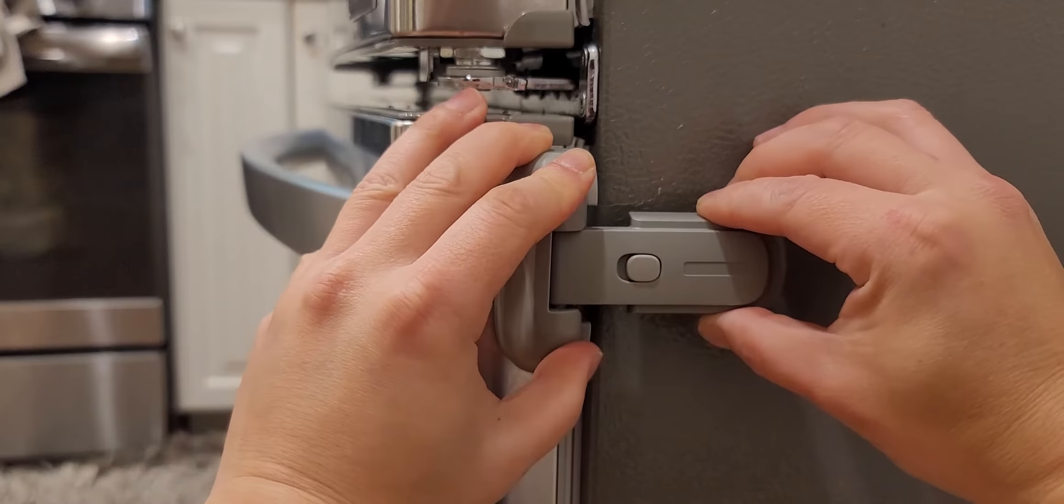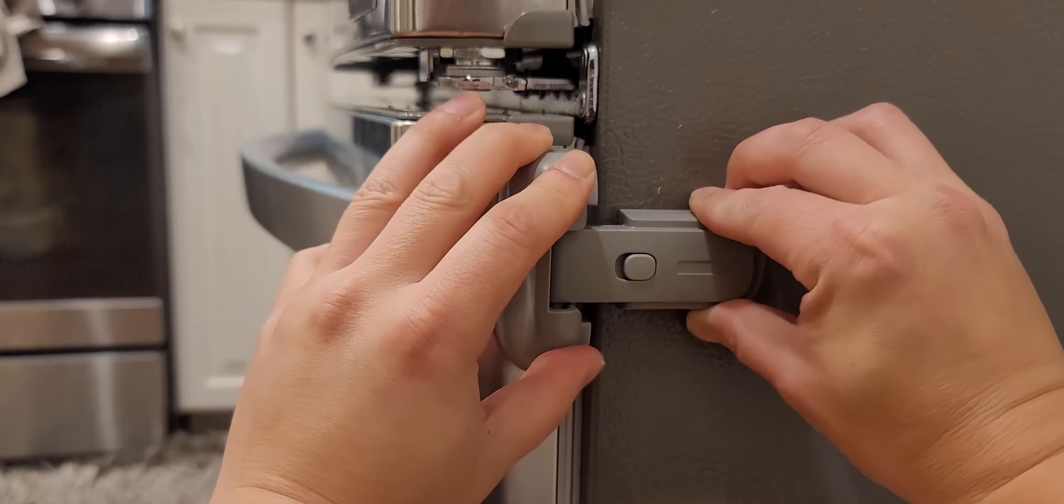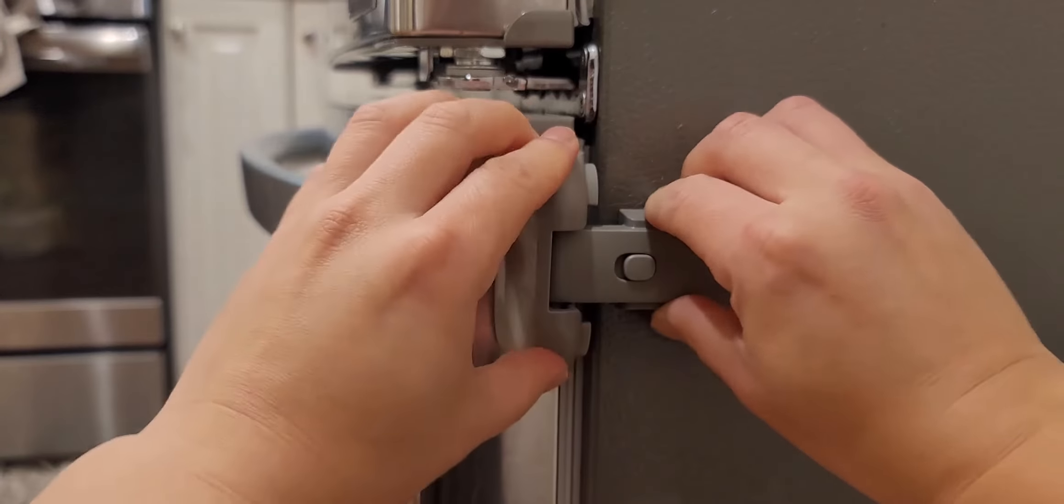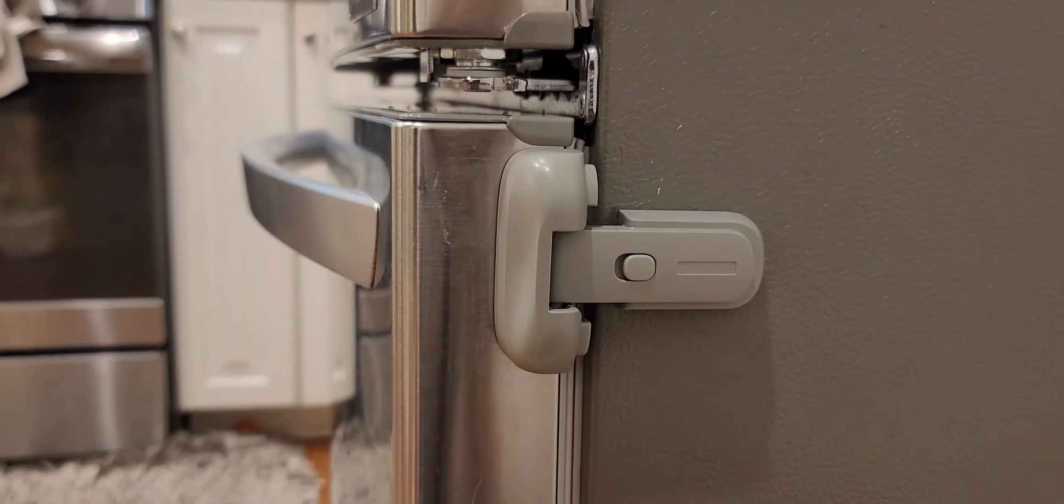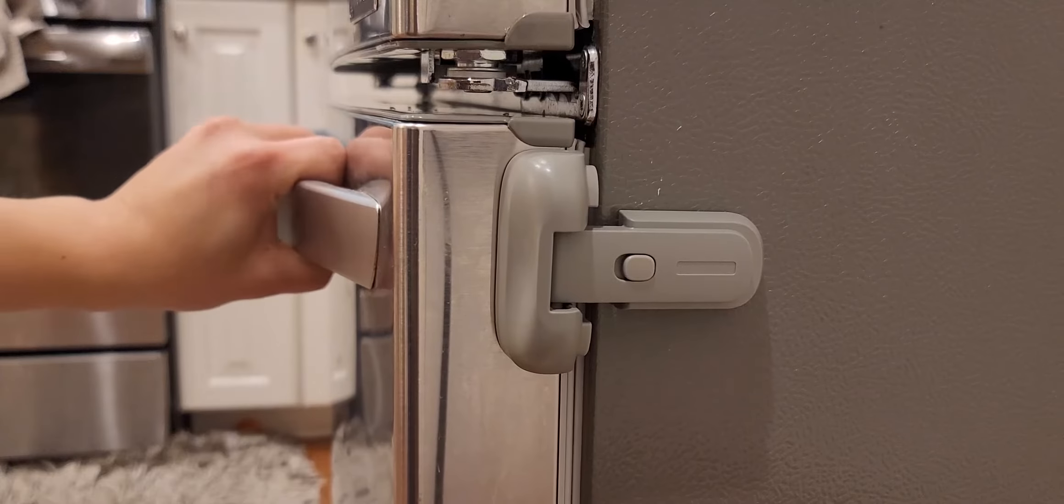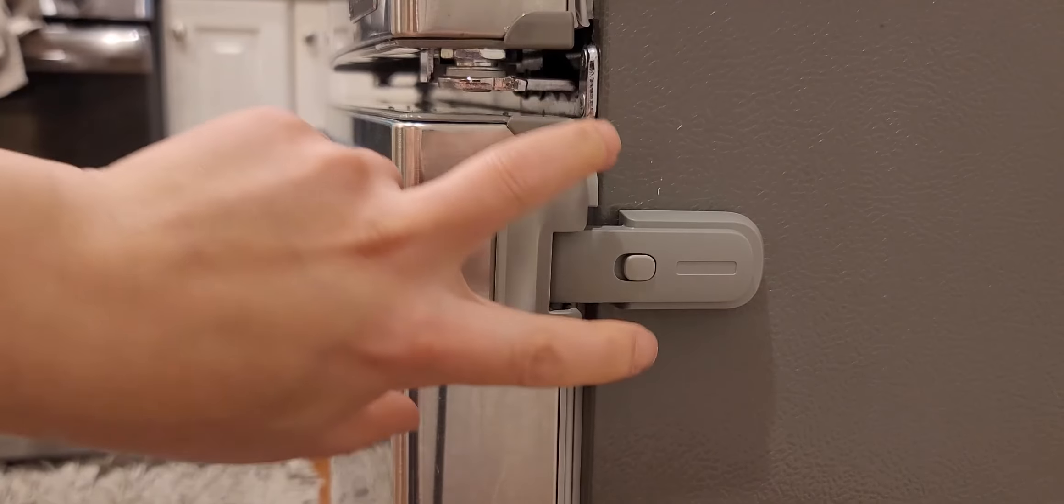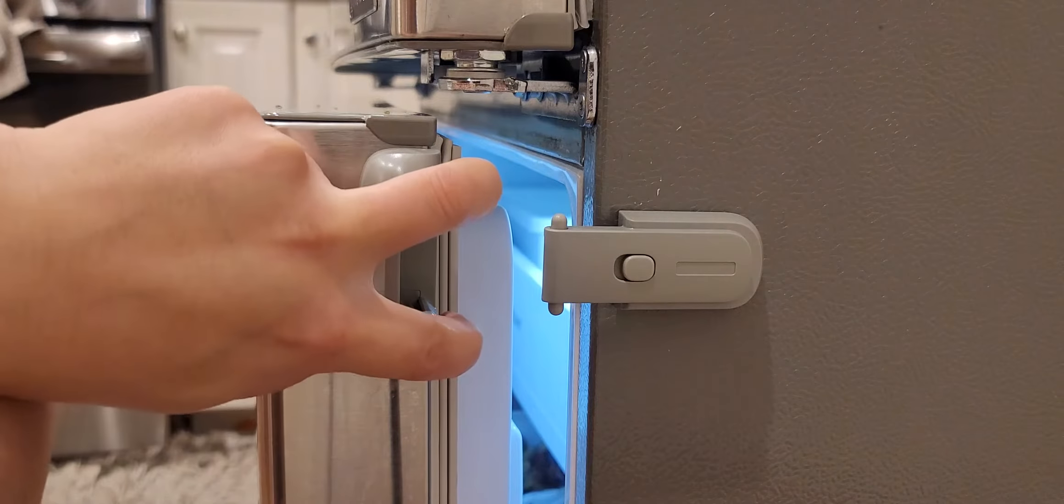And also, you want to make sure that the surface of your refrigerator where you're sticking it onto is clean so you have good adhesion. All right, so now that it's on, you can see that the door is not opening. To open it, you have to use two fingers like this, and now you can open it.